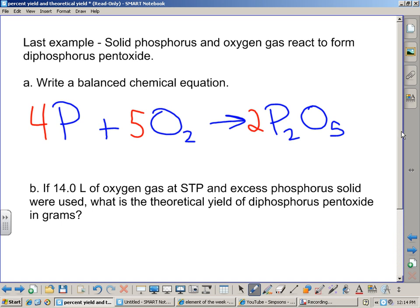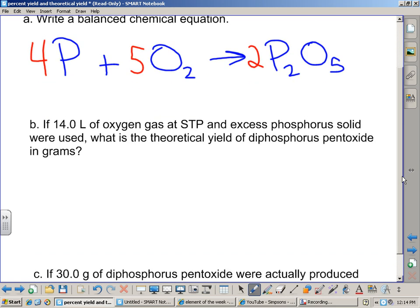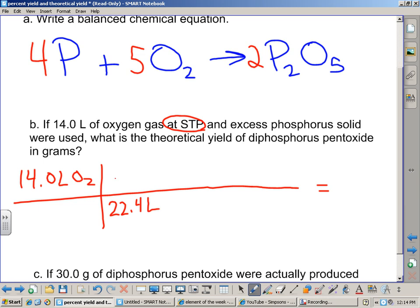So 14 liters of oxygen gas at STP. Ding, ding, ding, ding, right? Bells go off as soon as we see that. We know where we're starting on the mole map. Where are we on the mole map? The top part. Okay, so we're going to take the 14.0 liters of O2 and start at the top of the mole map, which says that we're going to divide by 22.4 liters per mole. Now, we're trying to get the diphosphorus pentoxide in grams, P2O5 there. That's our end result. So again, where we're starting, where we're trying to get to, and our first step there.